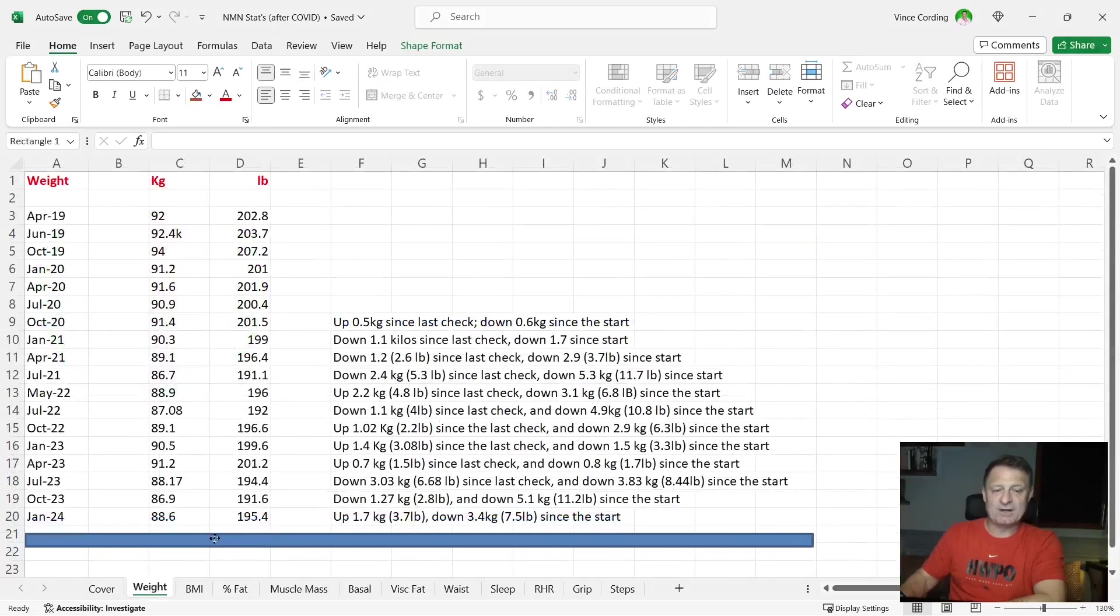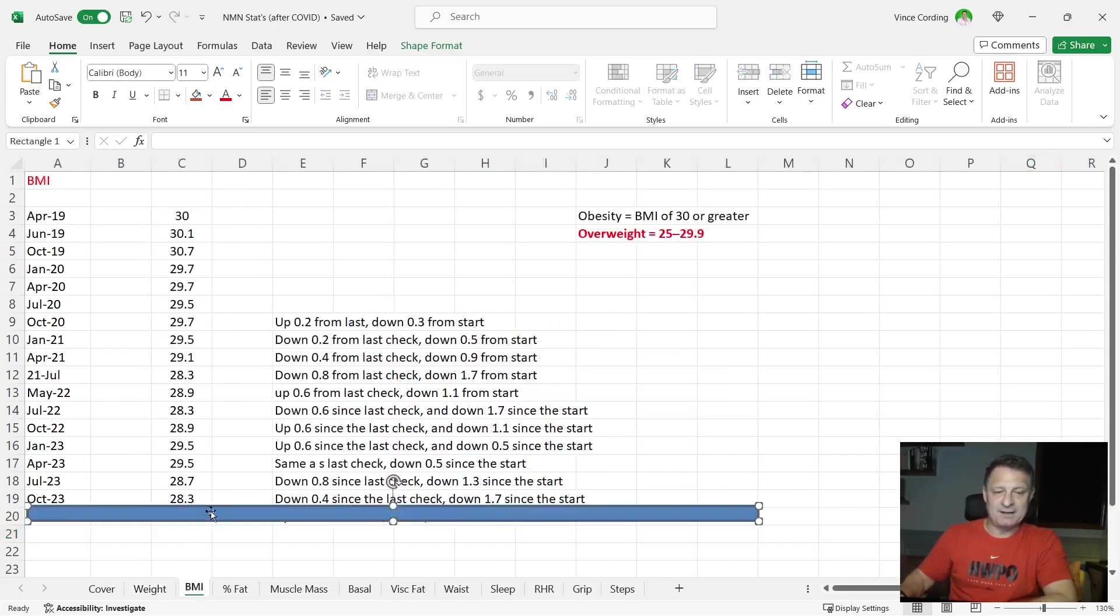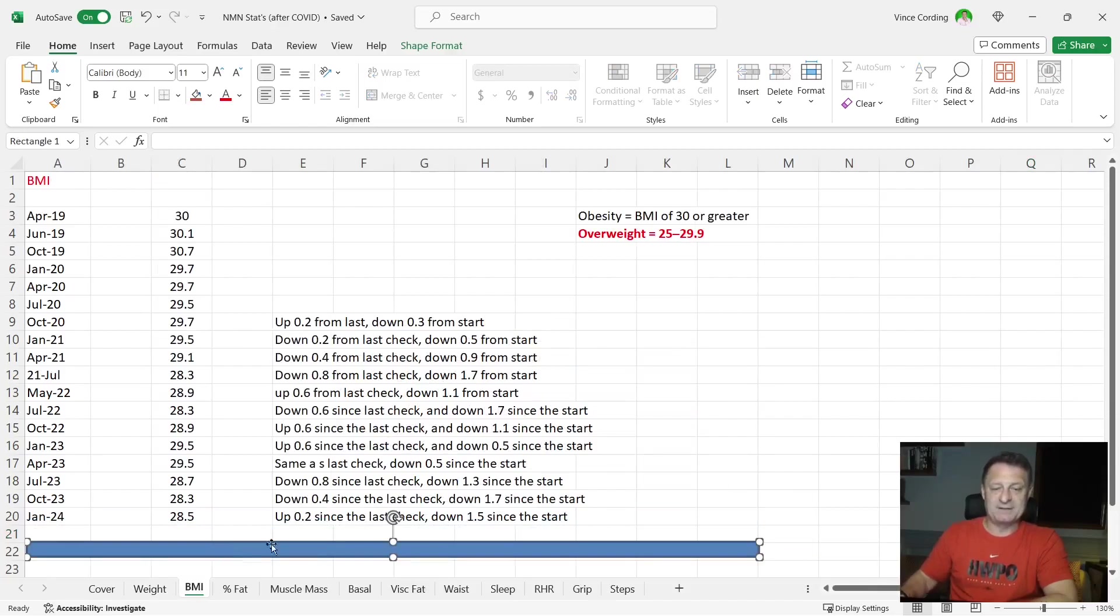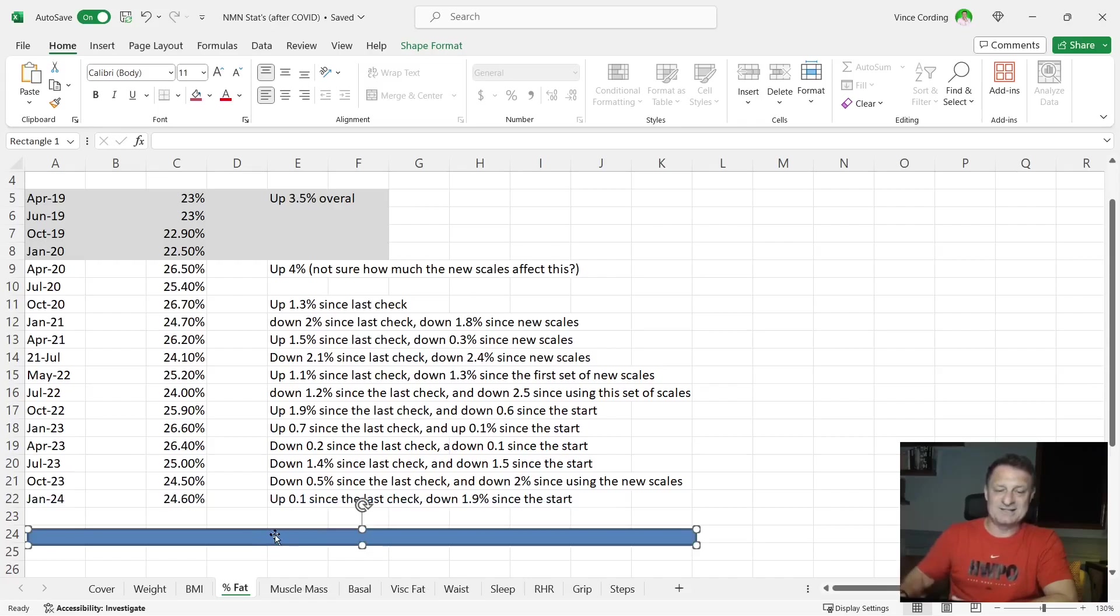First of all, my weight, you can see here, my weight is now 88.6 kilos, which is 195.4 pounds. That's up 1.7 kilograms, which is 3.7 pounds since the last test, but it's down 3.4 kilos, which is 7.5 pounds since I started this. My BMI is now 28.5 up 0.2 since the last check, but down 1.5 since the start. My percentage body fat is now 24.60. So up 0.1 since the last check, but down 1.9 since the start.